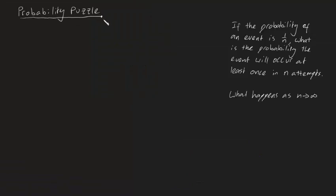G'day guys, in this video I've got a fairly abstract probability puzzle for you. We've been asked if the probability of an event is 1/n, what is the probability the event will occur at least once in n attempts? And the second follow-up question for those who really want to challenge themselves is what happens as n approaches infinity?